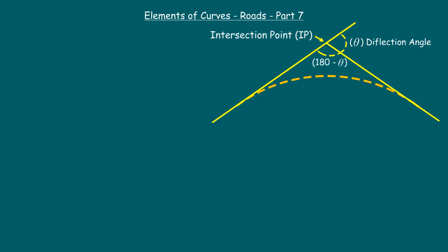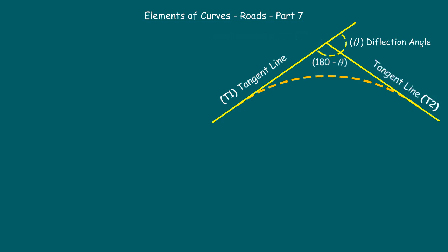The point from where the curve starts is tangent point one, also known as the point of curve, denoted as T1. The point where the curve ends and continues as a straight line is tangent point two, also known as the point of tangent, denoted as T2. A straight line connecting these two tangent points is the chord, also known as the chord length.